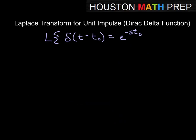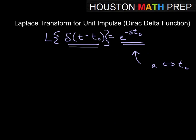The most important thing when dealing with unit impulse in differential equations is the Laplace transform of the unit impulse function — also called the Dirac delta function. The Laplace transform of delta(T − T₀) is simply e^(−sT₀). Thinking of T₀ as your A, this is essentially e^(−As). We'll be using this result quite a bit.